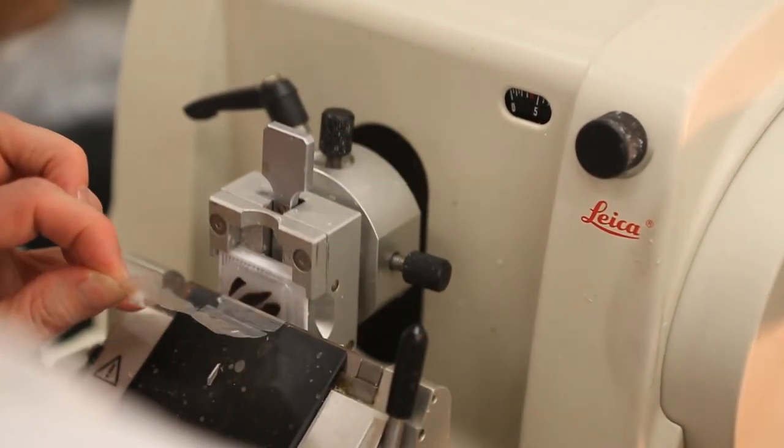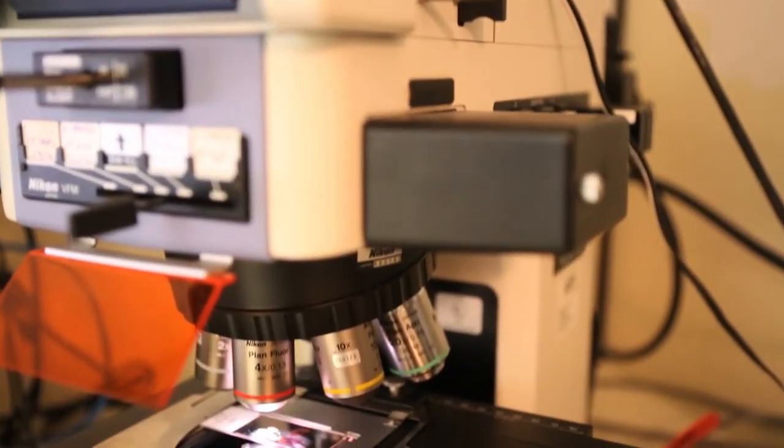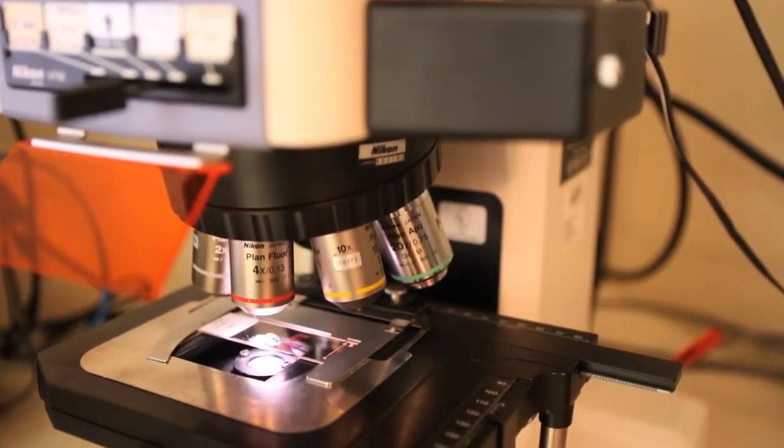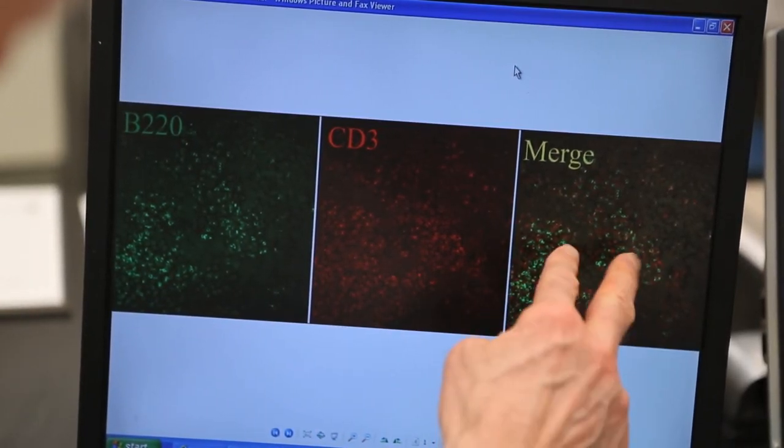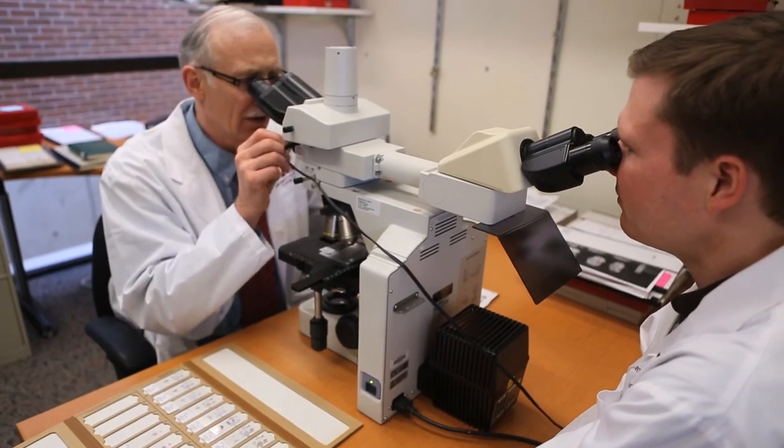A Deco automated immunostainer and Nikon Eclipse E800 microscope with Spot Insight digital camera is available for digital imaging, as well as light and fluorescence microscopy.